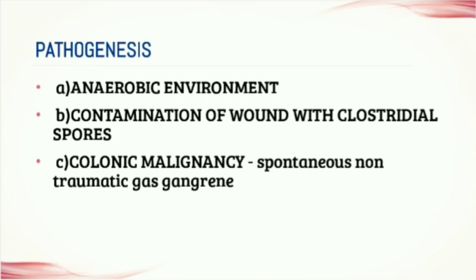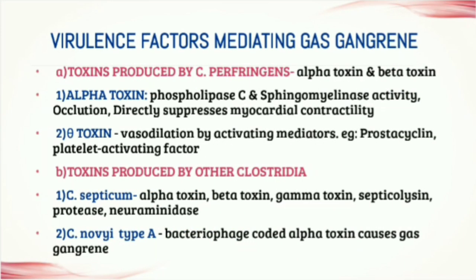Among the virulence factors that mediate gas gangrene, once Clostridium perfringens is introduced into the body, it proliferates and elaborates exotoxins, chiefly alpha toxin and theta toxin. The alpha toxin is the principal virulence factor, having both phospholipase C and sphingomyelinase activity. It activates platelet adhesion molecules and neutrophil receptors, causing platelets and neutrophils to aggregate in blood vessels, resulting in occlusion. Alpha toxin also directly suppresses myocardial contractility, leading to reduction in cardiac output and resulting in profound hypotension.